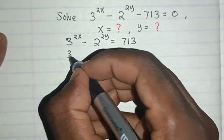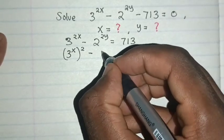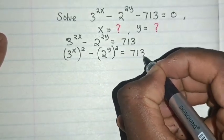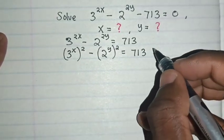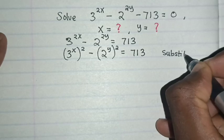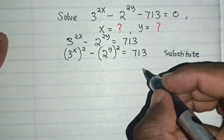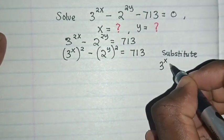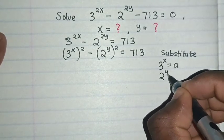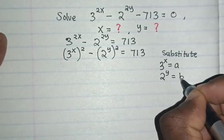So 3^x times 2, 2^y times 2 is equal to 713. So we substitute 3^x = a and 2^y = b.